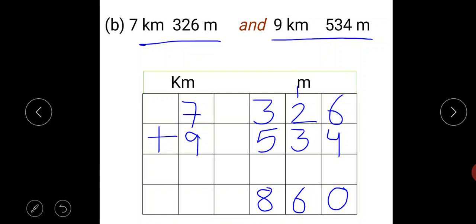Now 4 kilometres, 9 and 7 is 16. So our answer is 16 kilometre, 860 metre.